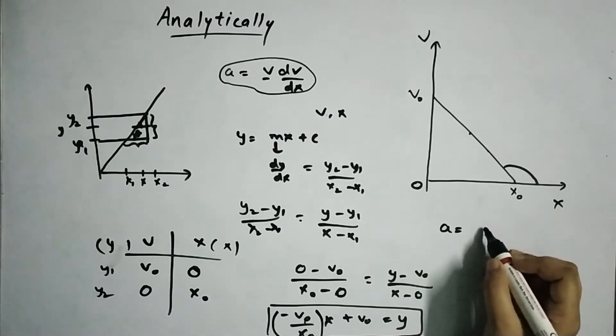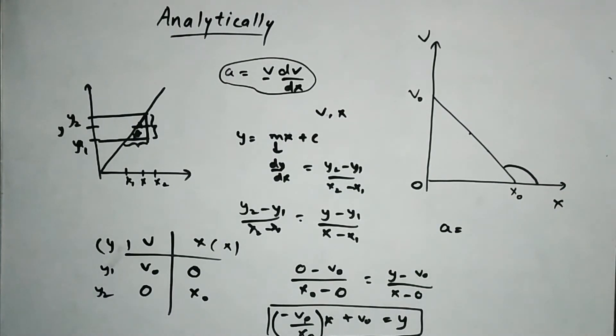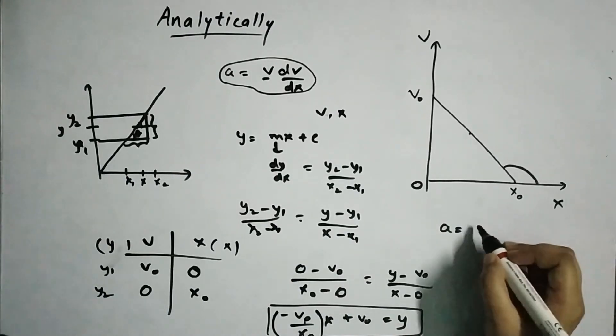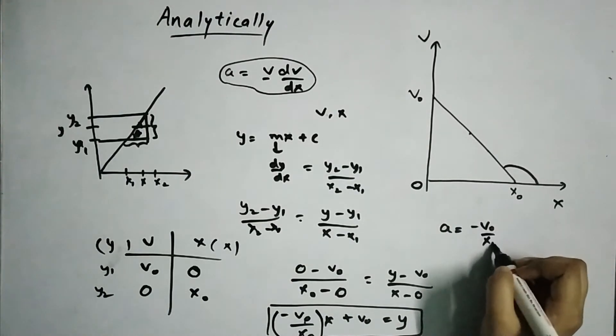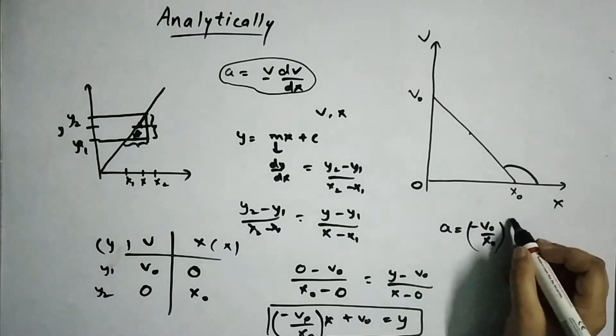Now we'll put this into this equation here and we will try to find the acceleration now. So acceleration will be nothing but dv by dx which is, so we have dv by dx here, right?